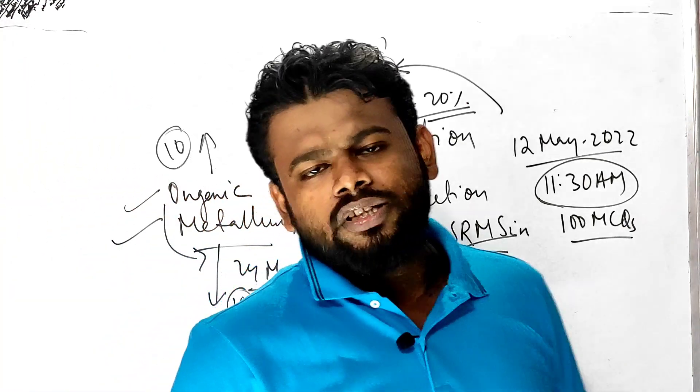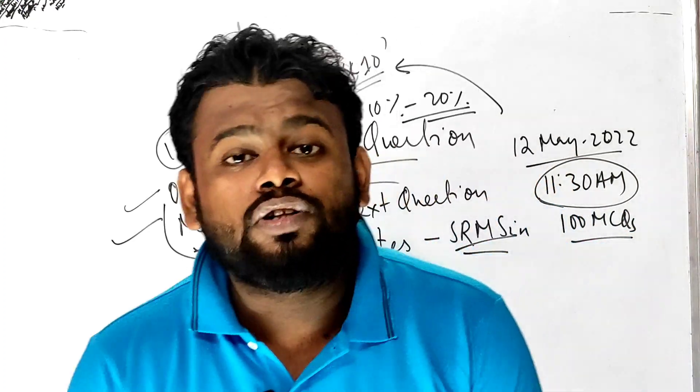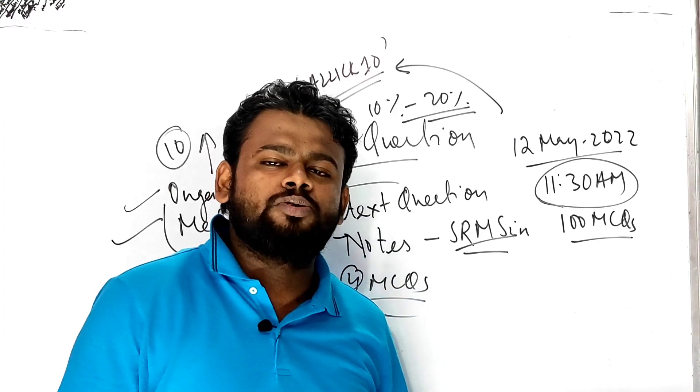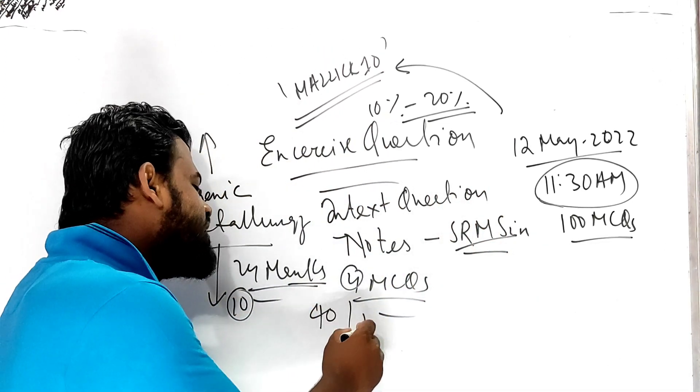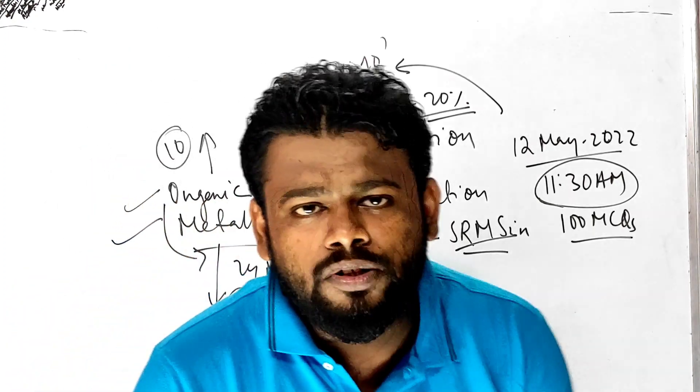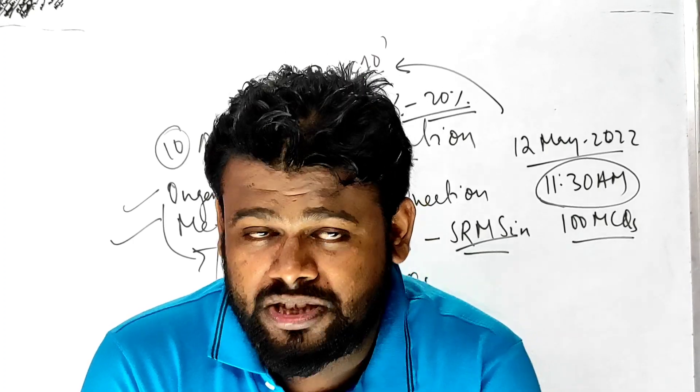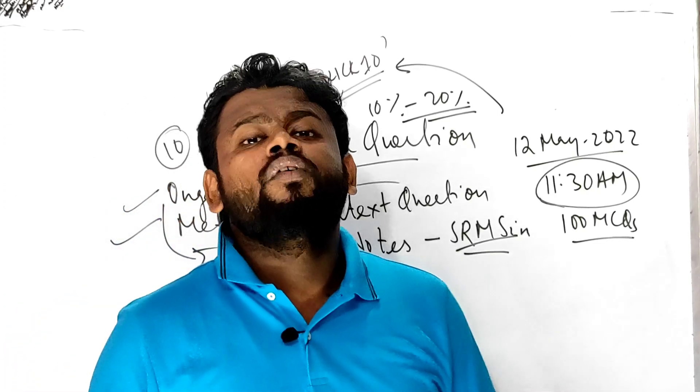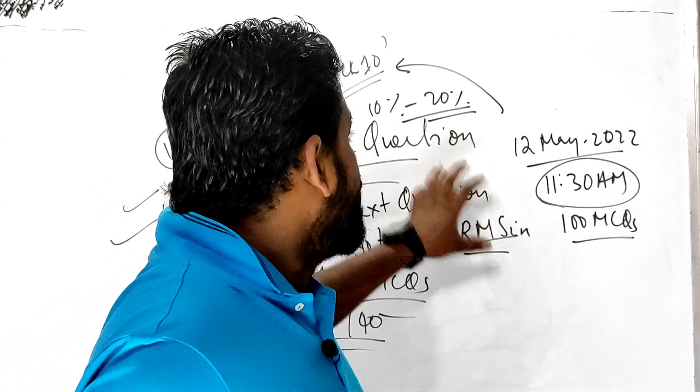If a boy or girl completes two chapters - organic and metallurgy - he or she can score 24 marks. Not only that, but if they do all exercise questions, 40 out of 40 is guaranteed. You can see semester one paper - 37 to 38 marks were from in-text and exercise questions.